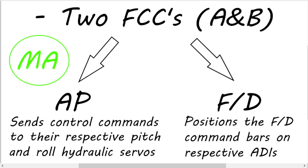Let's start by talking about the flight control computers. We have two FCCs which provide data to the autopilot flight director system — data to the autopilot and data to the flight director. Now if it provides data to the autopilot then you have to give a close look to the green master light above the flight director switches, because while the FCCs are working independently from one another, the autopilot can only be controlled by either one. Let's keep it simple here and provide some basic understanding.